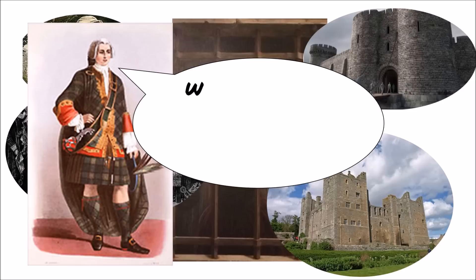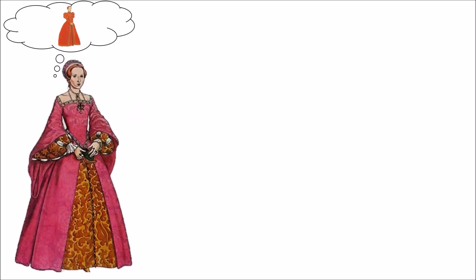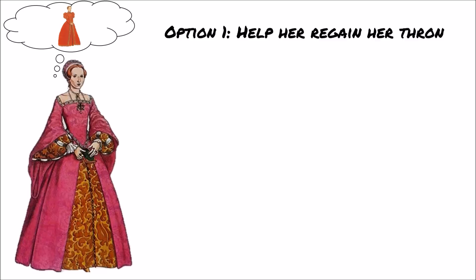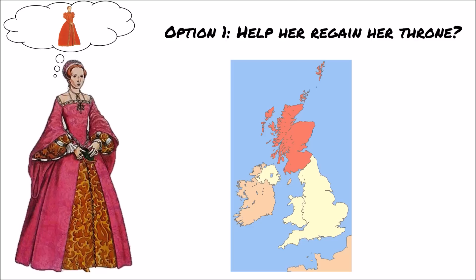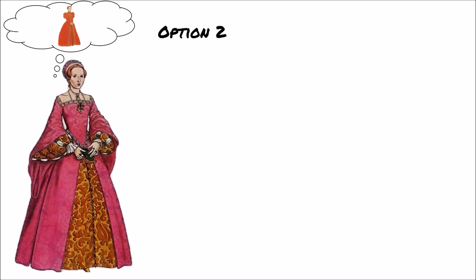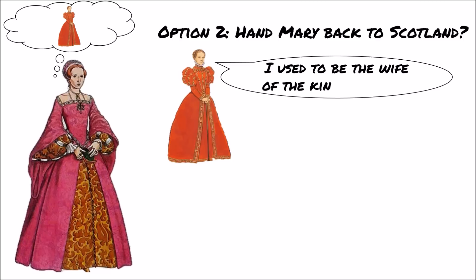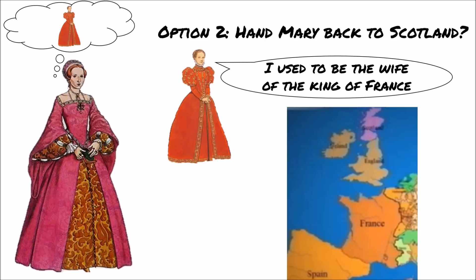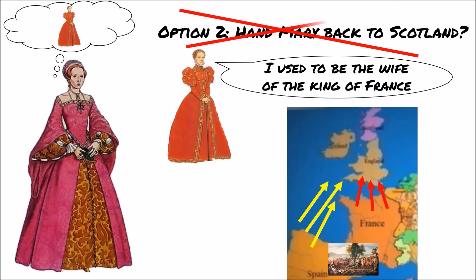The Scottish rebels demanded that Mary be handed over and tried for the murder of Darnley. Elizabeth faced a number of possible solutions. She could help Mary regain her throne, but this would anger the Scottish nobility and leave Elizabeth facing a Catholic monarch on her northern border. The old alliance between Scotland and France could then be revived to threaten her — creating a threat on two fronts. She could hand Mary over to the Scottish lords, but Mary was the widow of the French King Francis II, and her trial and execution with Elizabeth's permission could provoke France into an alliance with Spain, which could eventually lead to both countries attacking England.